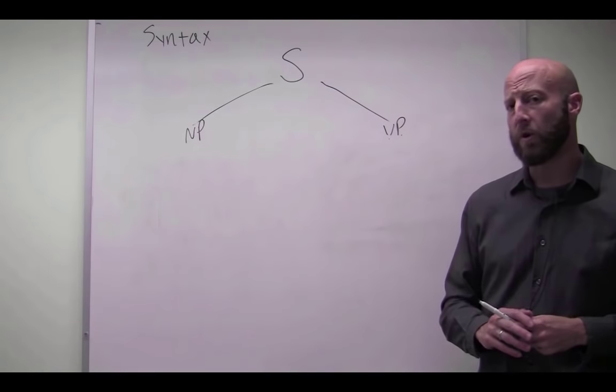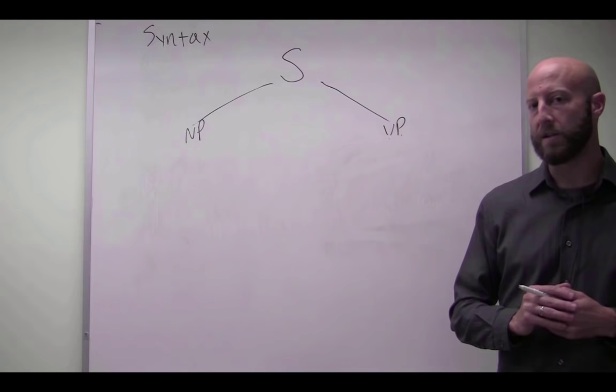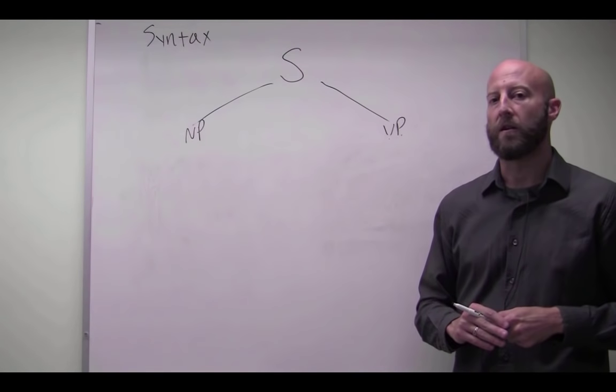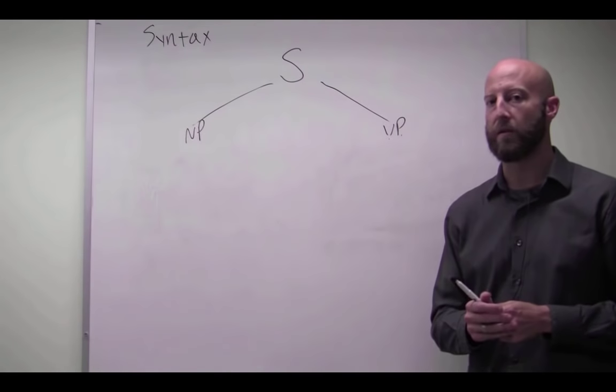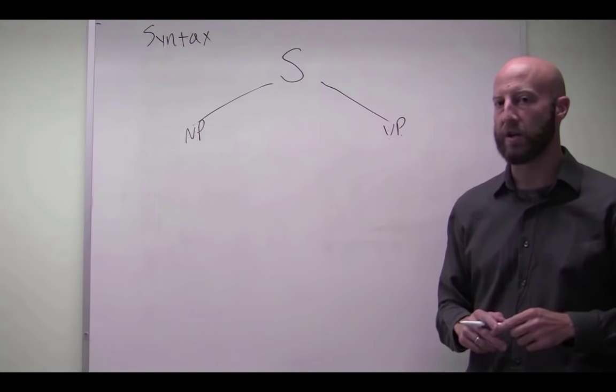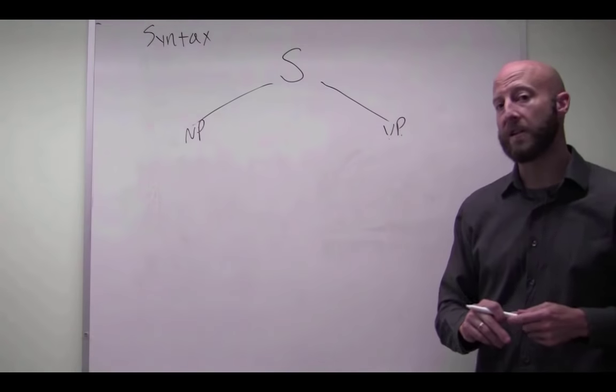Now, sometimes you also get what are called garden path sentences. Garden path sentences are maybe utterances that you hear that you are misled into one interpretation, and it was actually another interpretation. So a good example of this is the sentence,